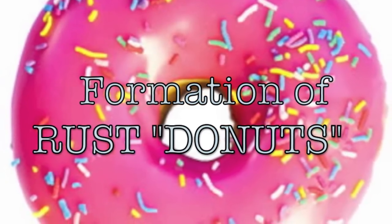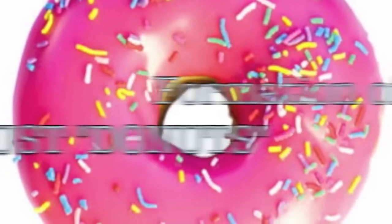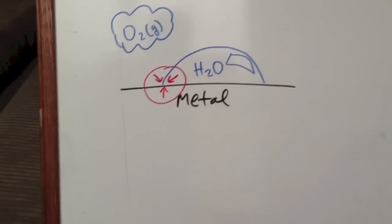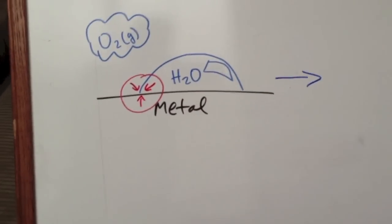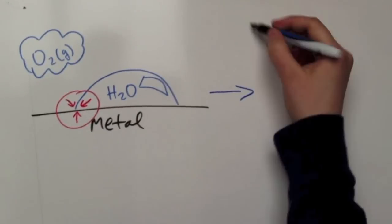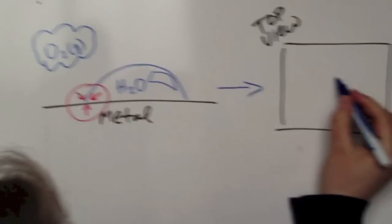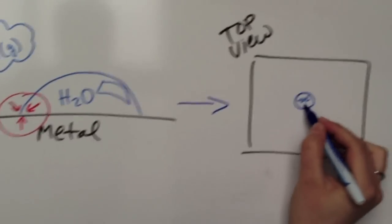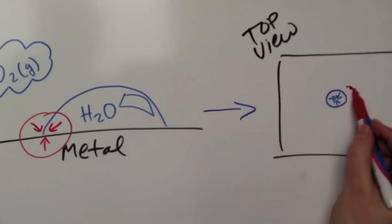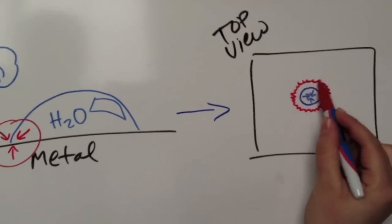Why do these rings of rust form? At the edge of a water droplet, all entities that are required to form rust are in contact. Thus, as the water evaporates, a ring of rust is left in its place.